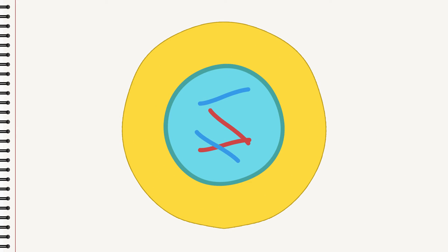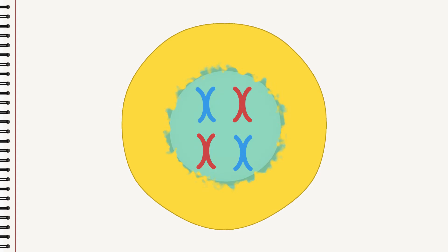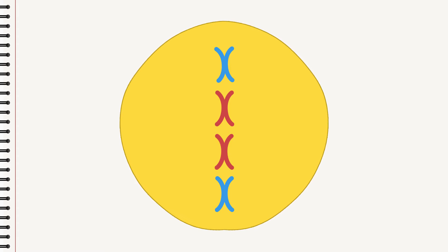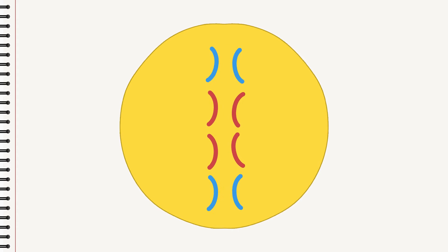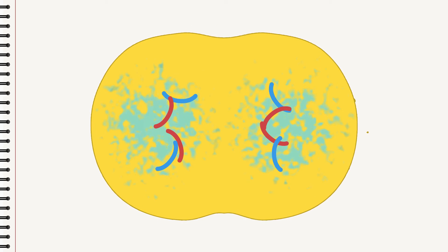This is one way cell division can work. Firstly, the chromosomes in the cell nucleus are duplicated and doubled. The cell nucleus is dissolved and the chromosomes line up. The chromosomes are pulled apart, the cell membrane retracts, and now two new cell nuclei...